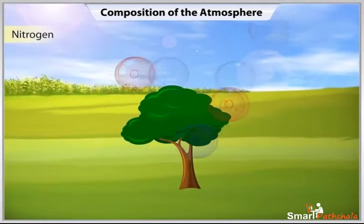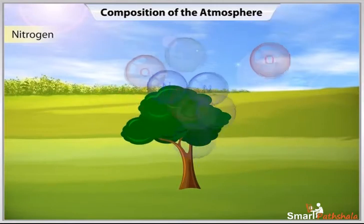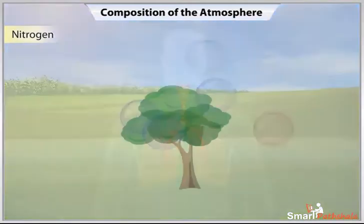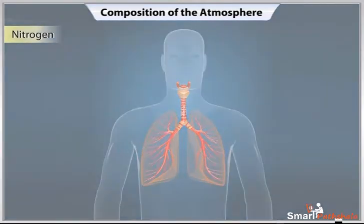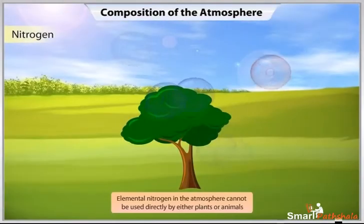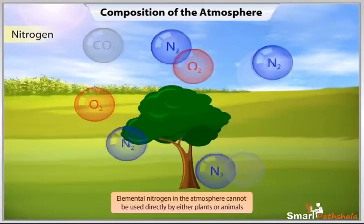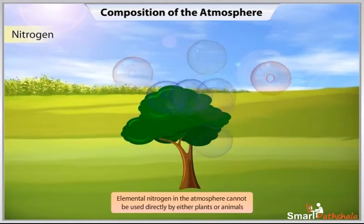Nitrogen, which is 78% Nitrogen gas (N2), is the major reservoir of Nitrogen. When we inhale, we take some amount of Nitrogen into our lungs and exhale it. But all living beings require Nitrogen for their survival. Elemental Nitrogen in the atmosphere cannot be used directly by either plants or animals.